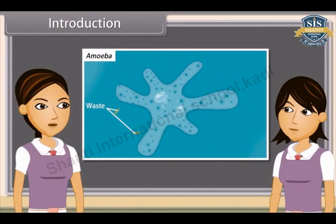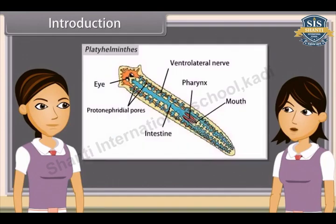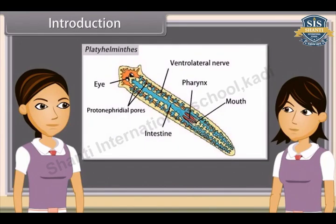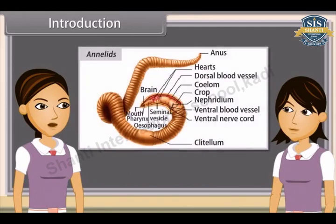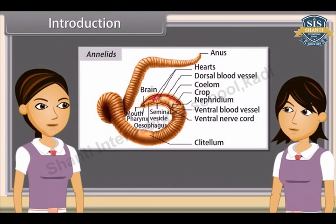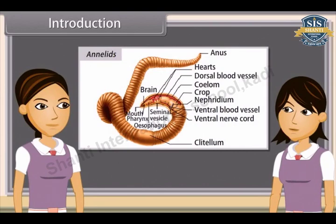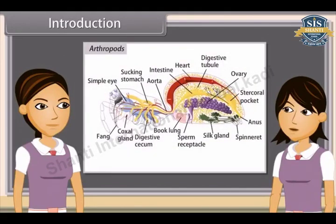Complex multicellular organisms use specialized organs to perform the same function. In Platyhelminthes, excretory organs are protonephridia or flame cells. While in annelids, it is nephridia. In arthropods, excretory organs are coxal glands, antennary or green glands, and Malpighian tubules.